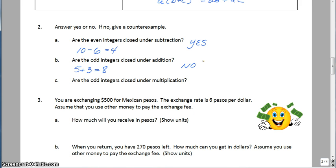So quickly give it a try for c. Pause the video. Are the odd integers closed under multiplication? Pick 2, so how about 5 times 3? We get 15, and the answer is yes.